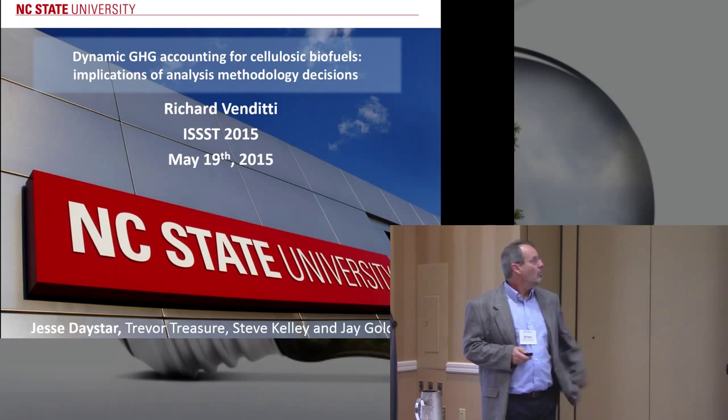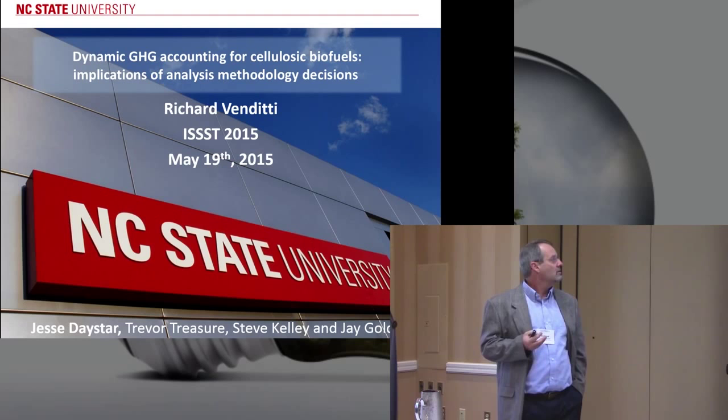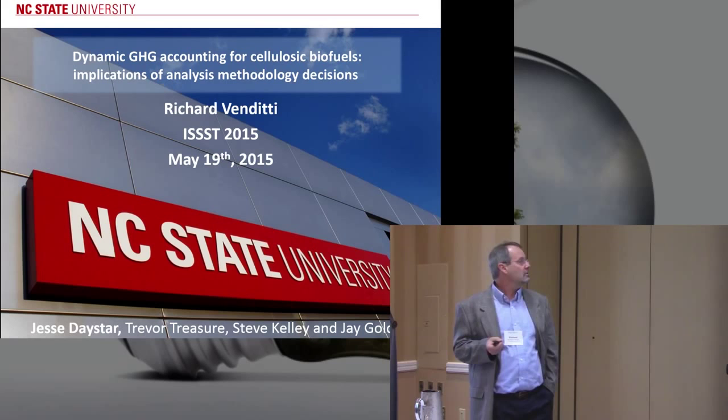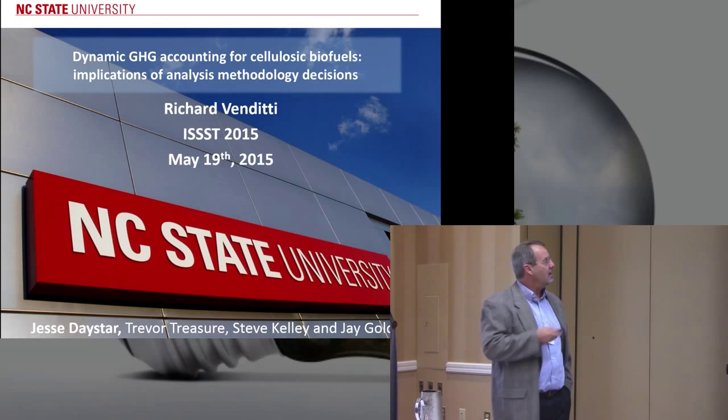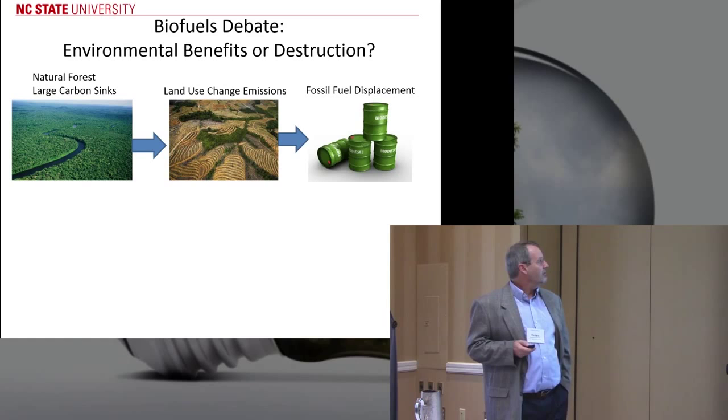What I'm going to talk about are cellulosic biofuels and some tools that we're using to probe a little bit deeper into the global warming potential of these biofuels with respect to time of emissions. We're going to talk about how we use dynamic global warming potential as a more sensitive and more robust way to understand global warming potential in these materials.